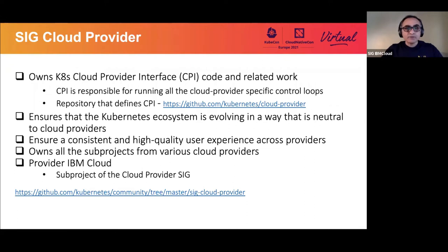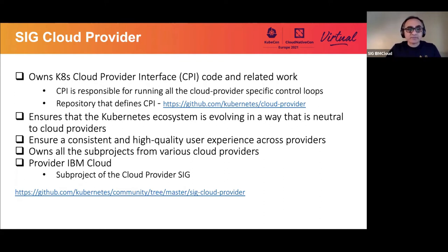You might already know about the Special Interest Group Cloud Provider. It owns the Kubernetes Cloud Provider Interface, the code and related work, which is responsible for running all the cloud provider-specific control loops. When you run Kubernetes on different cloud providers, they have their own requirements and functionalities — for example, load balancers. You can learn more about the code in the GitHub repo for the cloud provider; I have put a link here.